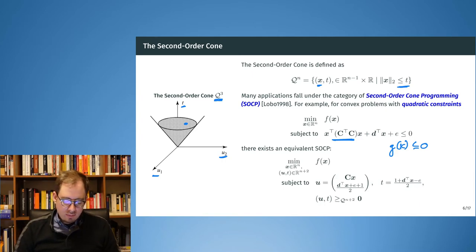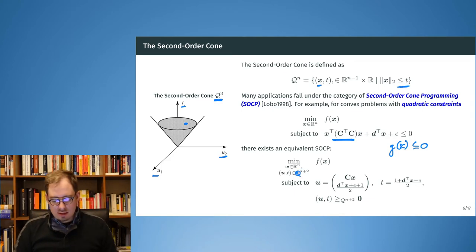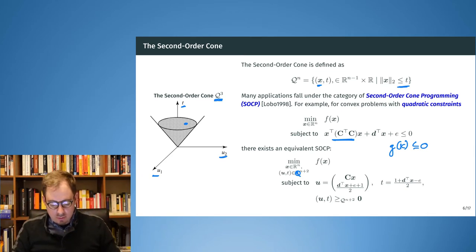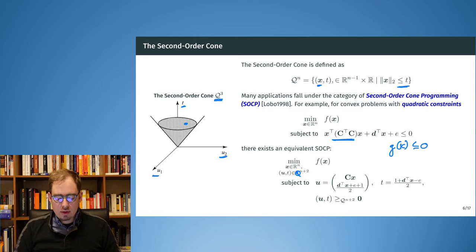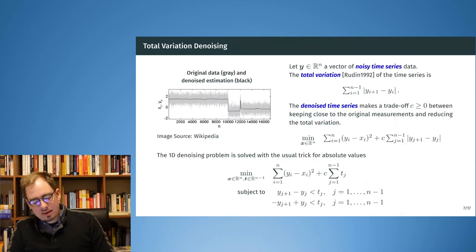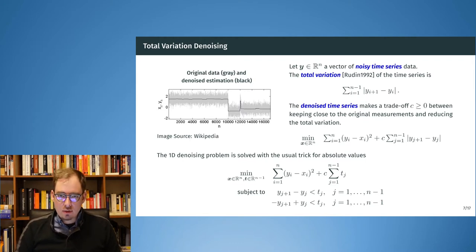We can rewrite the whole thing and in the end we get a formulation as a conic program with second-order cone constraints. Now let's look at some practical examples. The first one is total variation denoising.